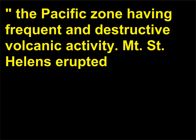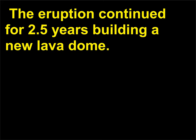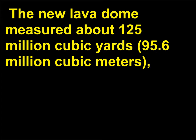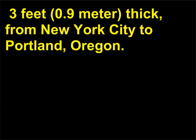Mount St. Helens erupted again in October 2004. A steam plume billowed 10,000 feet (3,048 meters) into the air. The eruption continued for 2.5 years, building a new lava dome. The new lava dome measured about 125 million cubic yards (95.6 million cubic meters) — a volume equal to nearly 200 large sports stadiums. The amount of lava that erupted would have been enough to pave seven highway lanes, 3 feet (0.9 meter) thick, from New York City to Portland, Oregon. There was no loss of life during this eruptive period.